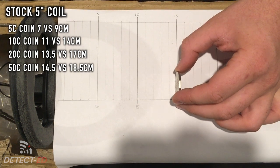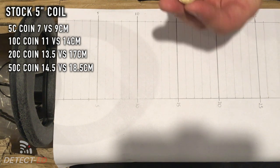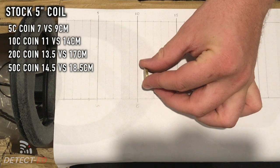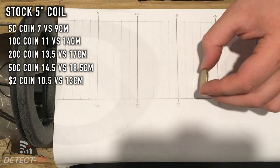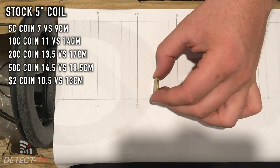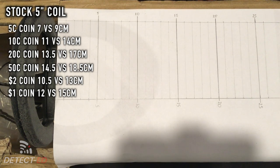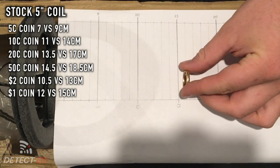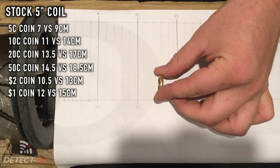Okay, $2, 10.5. And now $1 coin, 12 centimeters. Now the 14 carat 5.7 gram ring, 12.5.